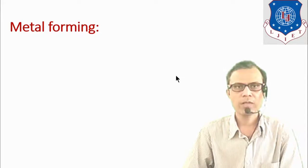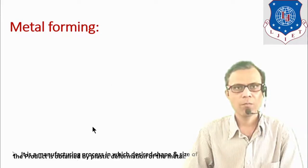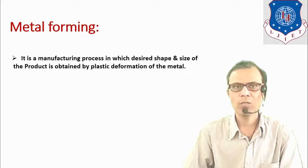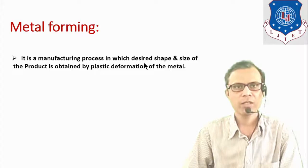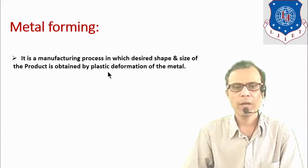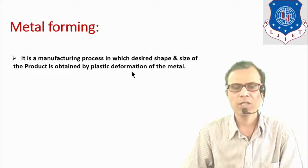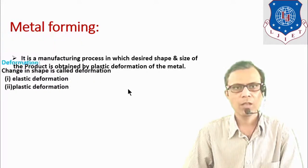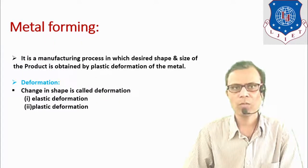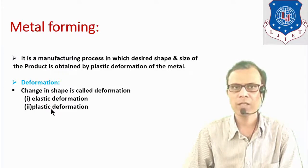Let us first understand what is metal forming. Metal forming is one kind of manufacturing process in which the desired shape and size of the product is obtained by plastic deformation of the metal. Deformation means change in shape and size. There are two types of deformation: elastic deformation and plastic deformation.